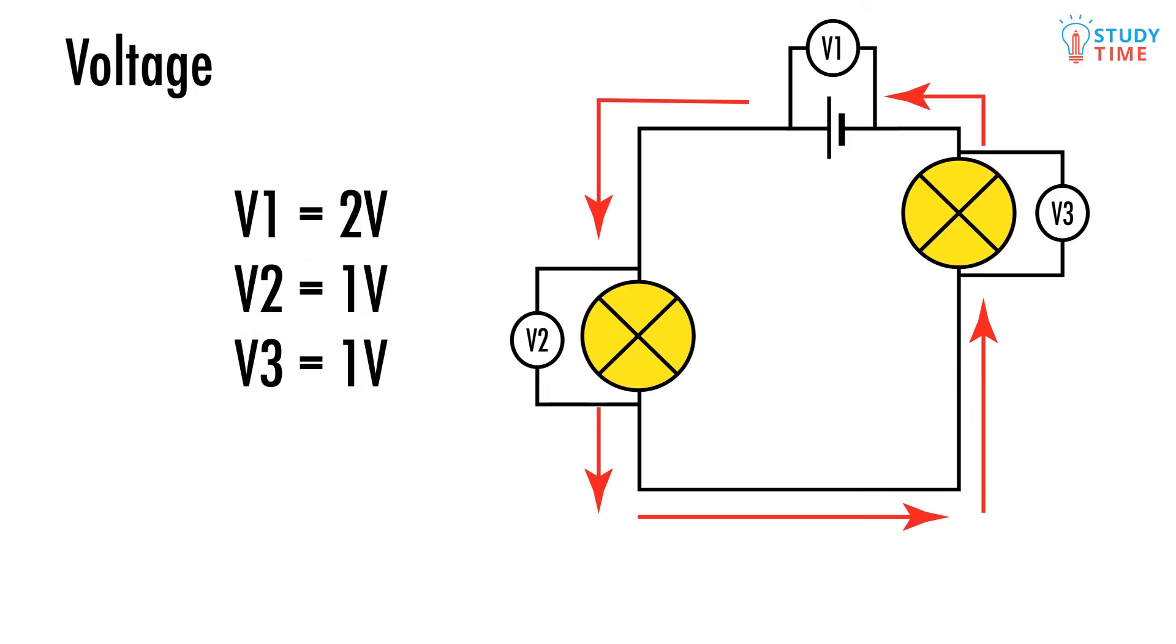And here's what each of the three voltmeters is going to say. V1 will show two volts. V2 shows one volt, as does V3.